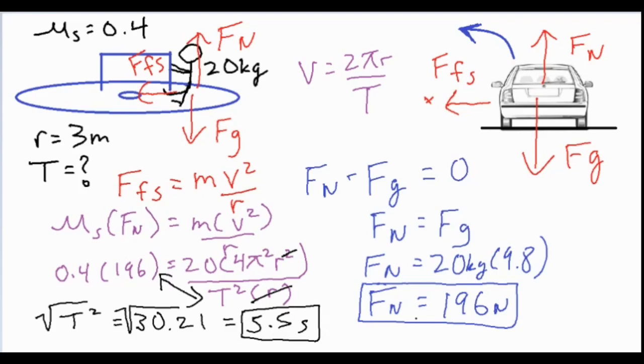So depending on what you're asked for, the problem might look a little bit different, but the main components are that you have the Fg and normal force that for the person or the car are going to be equal to one another, and that FN is going to be significant in putting it over here for your force of static friction formula.